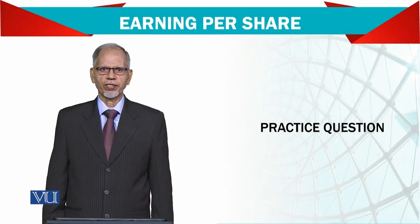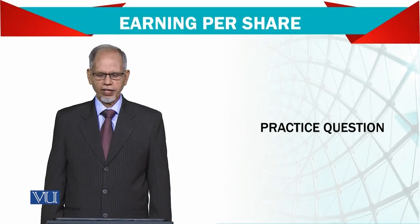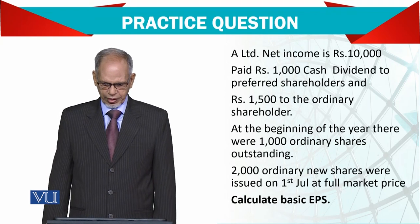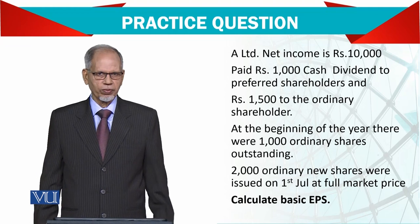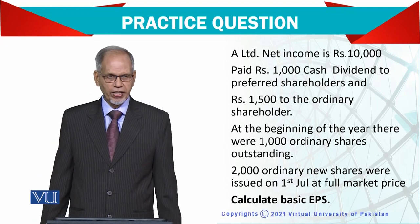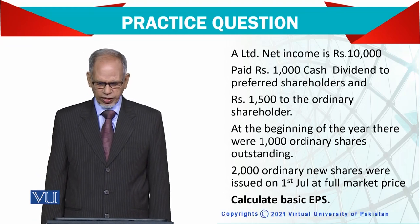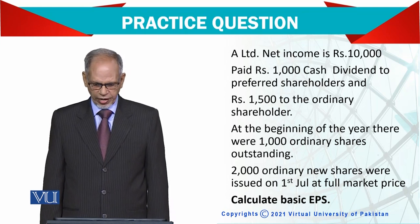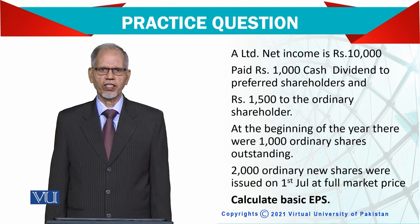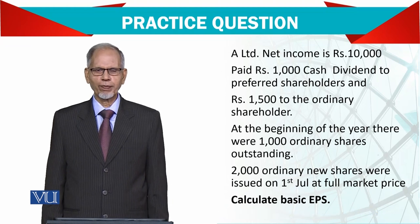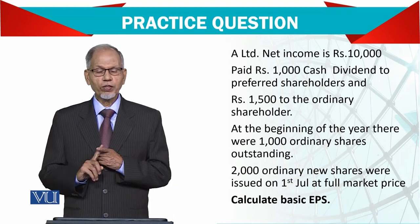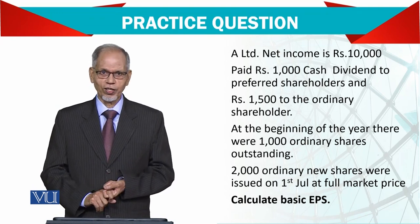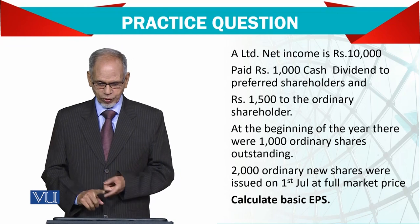Let's have a practical question: how the earnings per share is calculated. A limited company's net income is 10,000 for the period and paid 1,000 cash dividend to the preference shareholders and 1,500 to the ordinary shareholders. So try to understand here — we need to deduct only the preference share dividend, not the ordinary share dividend, to get the remaining balance.